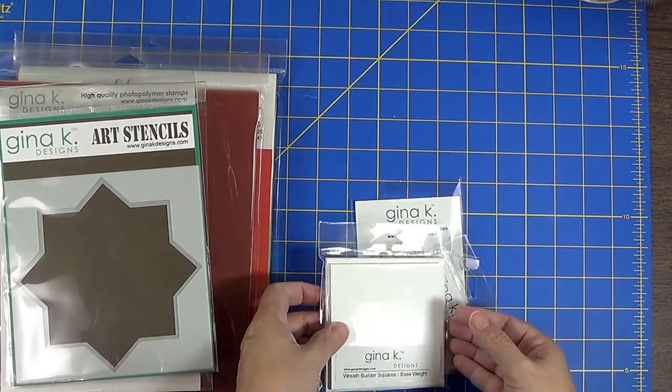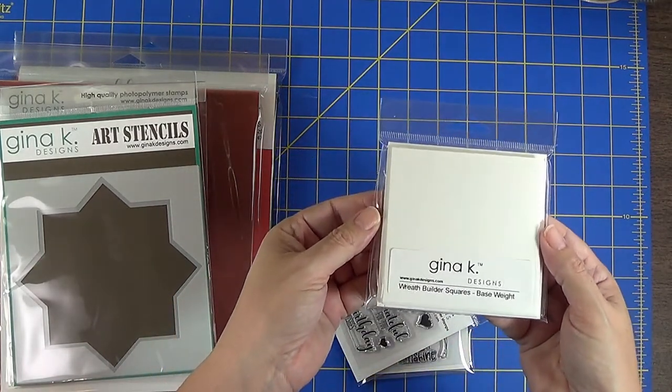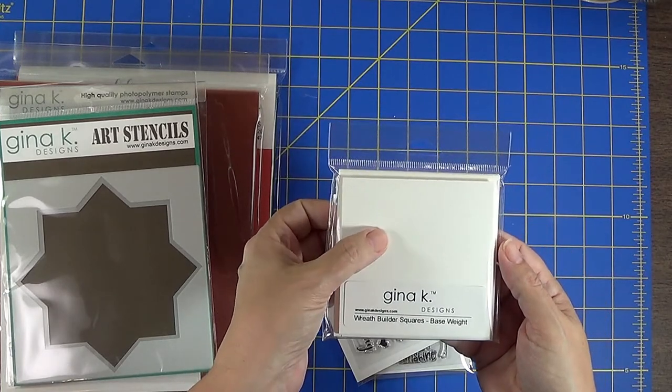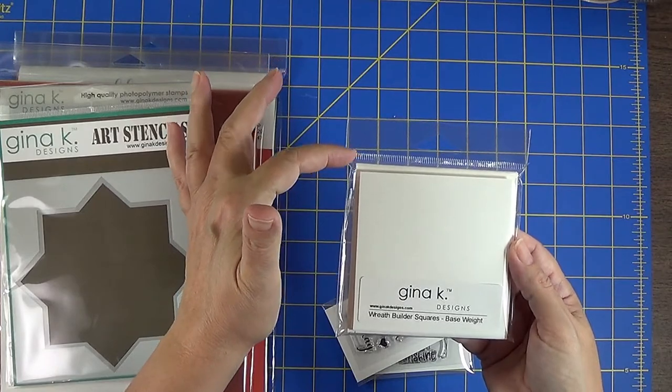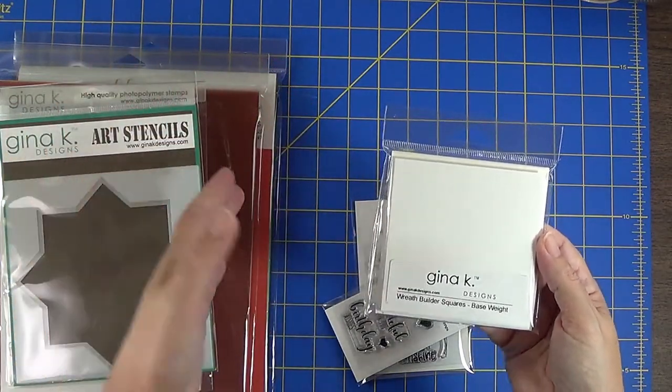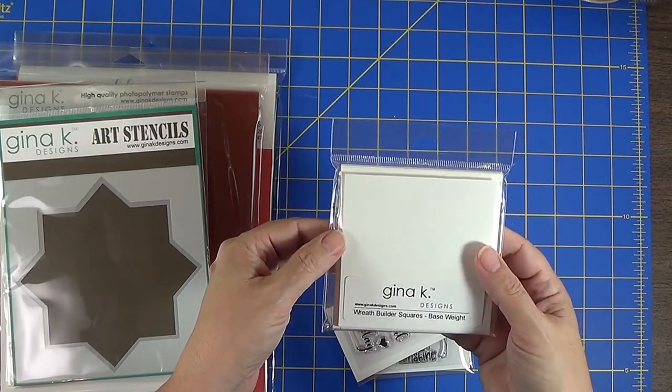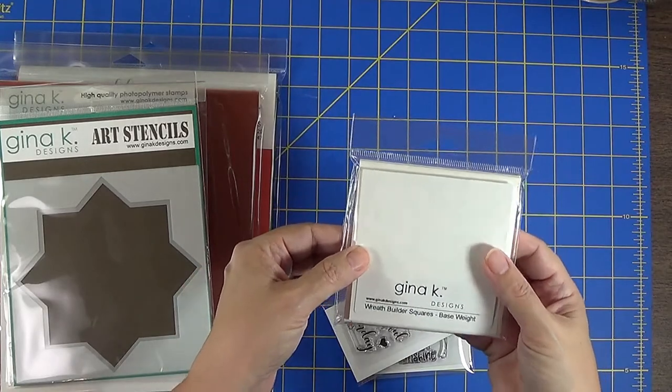And as a splurge, I ordered the card stock, the pre cuts card stock to go with it. And this you get 12 pieces of three and three quarters card stock and 12 pieces of four inch card stock. Yes, you can cut it yourself and I will once I run out of these, but I thought this would get me up and going quickly. And these are 120 pound base weight, very heavy card stock and they're in white.